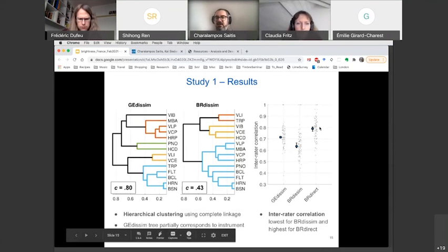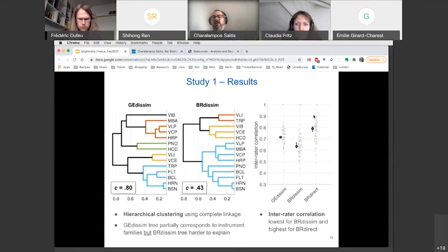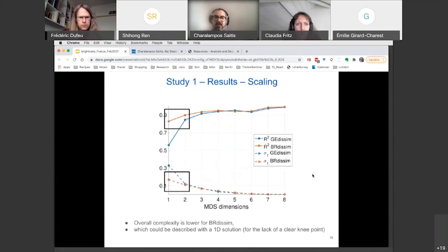We also looked at inter-rater correlation in the three tasks, and we have a higher inter-rater correlation in the direct task. So generally, it seems that the semantic rating might make more sense than the similarity and indeed brightness dissimilarity had a lower, the lowest actually inter-rater correlation indicating that it was kind of a hard task, at least compared to general dissimilarity and to direct ratings. And then preparing for the multidimensional scaling analysis, we look at some metrics of how the solutions converge for different number of dimensions. And we can see that the general dissimilarity ratings needed at least two dimensions to be explained, perhaps three as usually, whereas brightness dissimilarity could actually be explained just with a one dimensional solution.